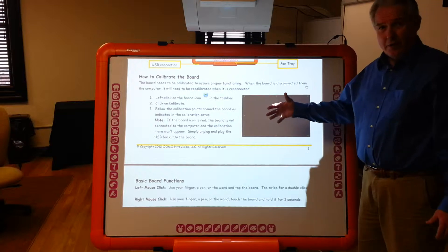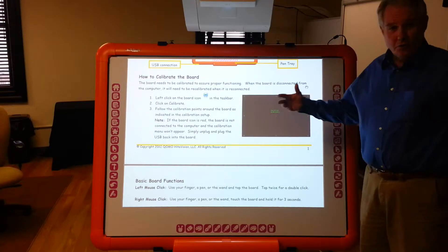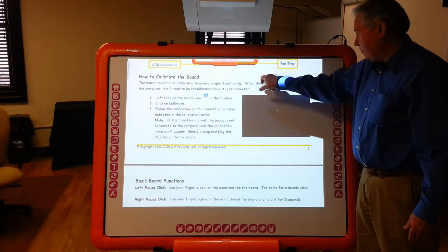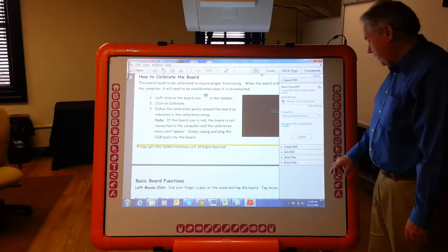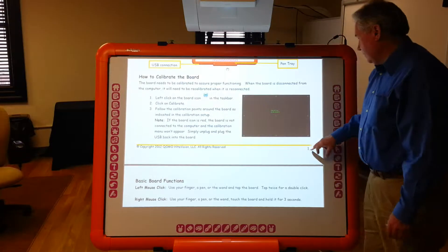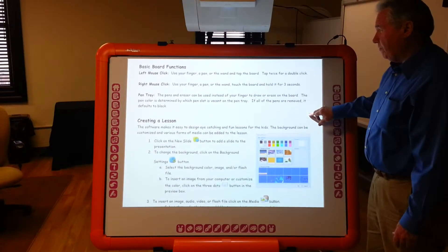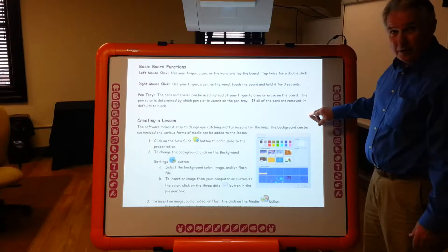Also, it shows you how to calibrate the board in case you lose calibration, meaning when I touch the board, my finger is where I want it to be. It tells me my basic board functions, about my left and right mouse clicks.